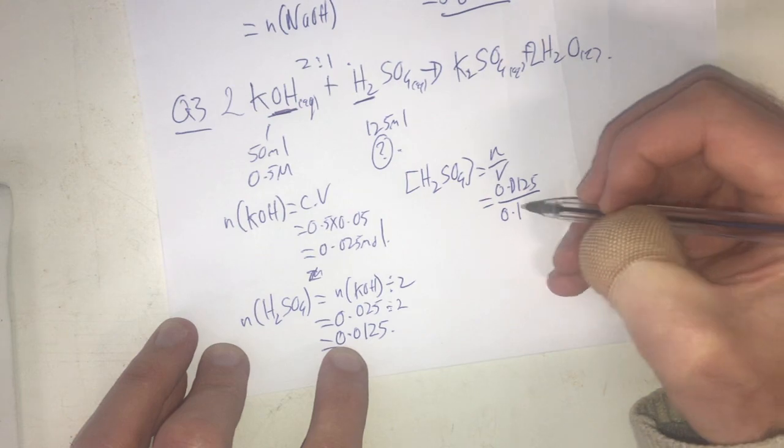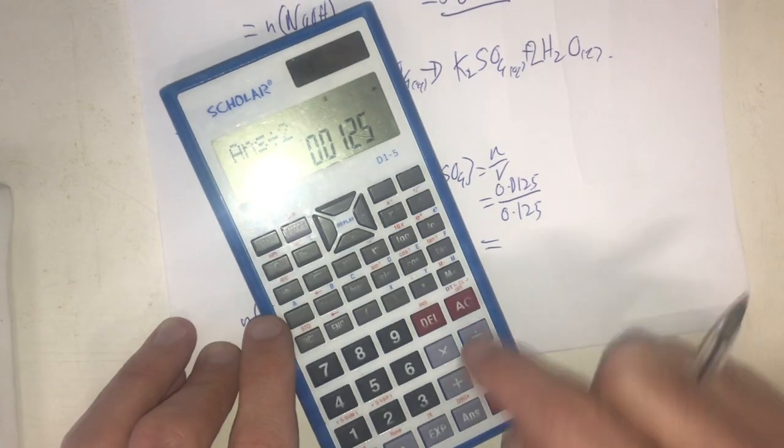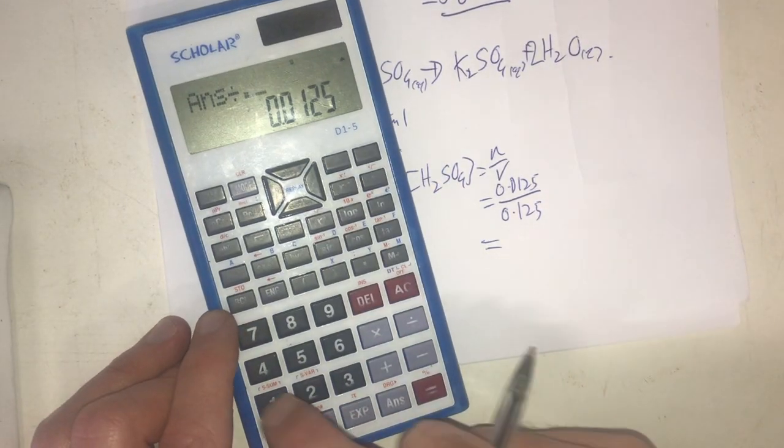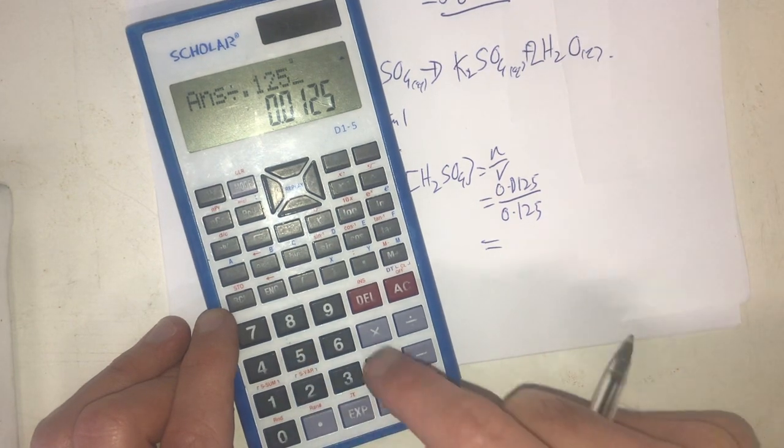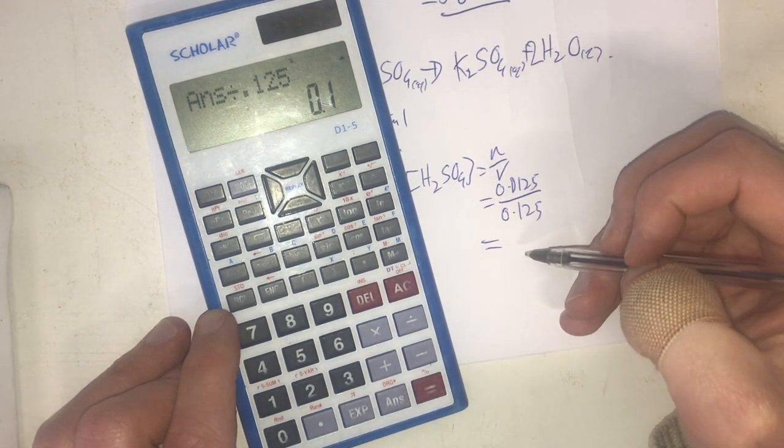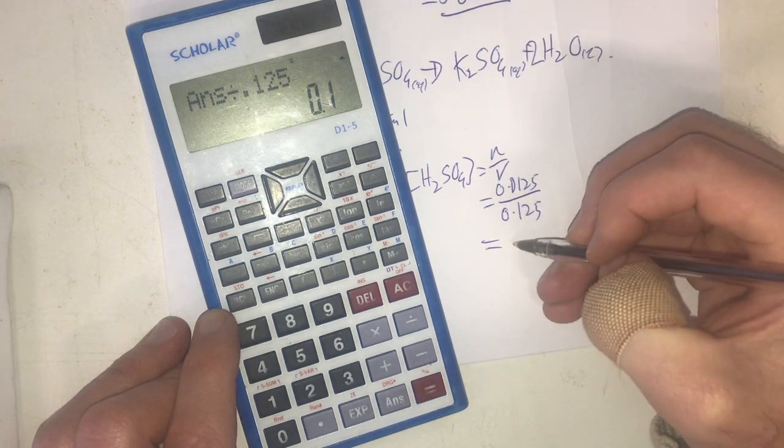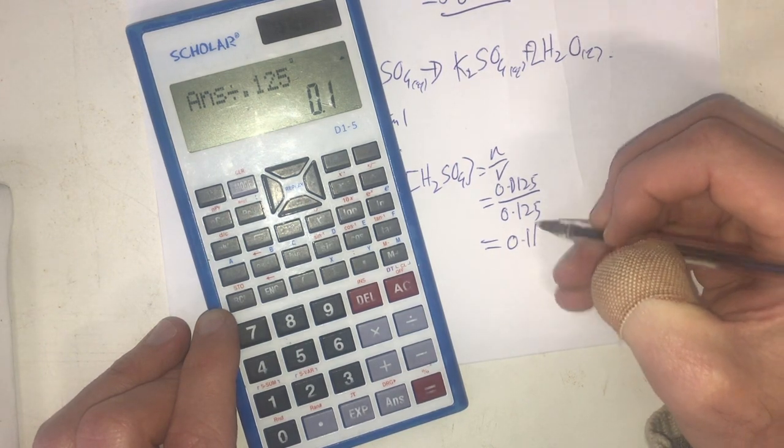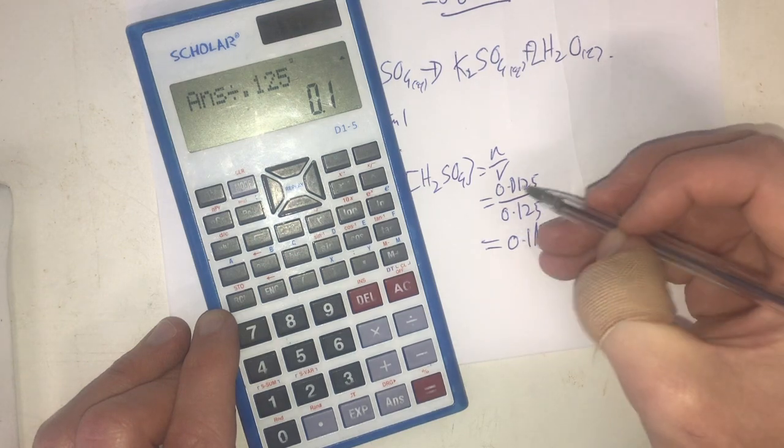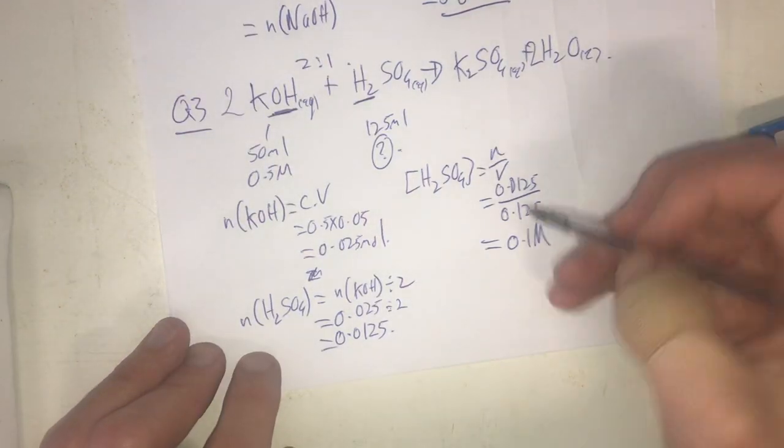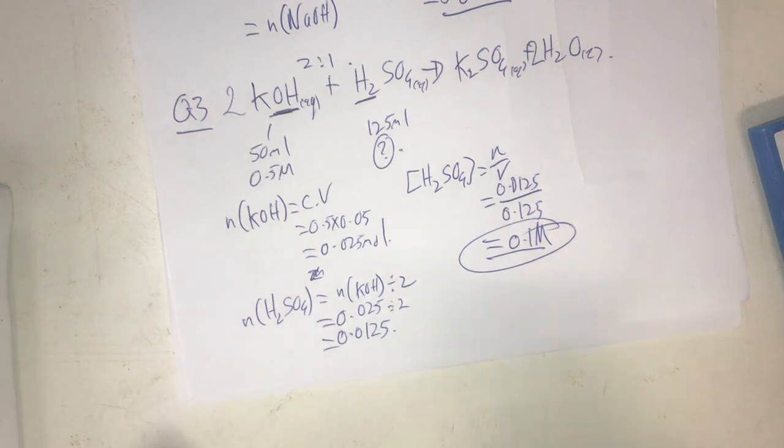And that should be 10 by the looks of it, and it is 0.1 - what am I doing - 0.1, why did I say 10? Oh yeah, because I've got it around the other way, but anyway, that's my concentration of sulfuric acid.